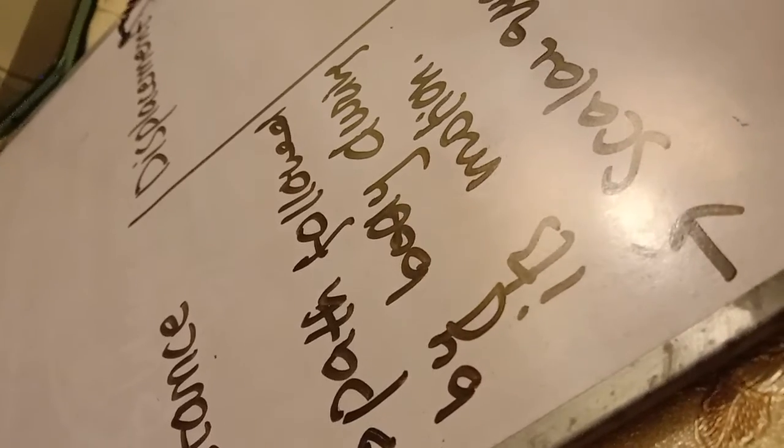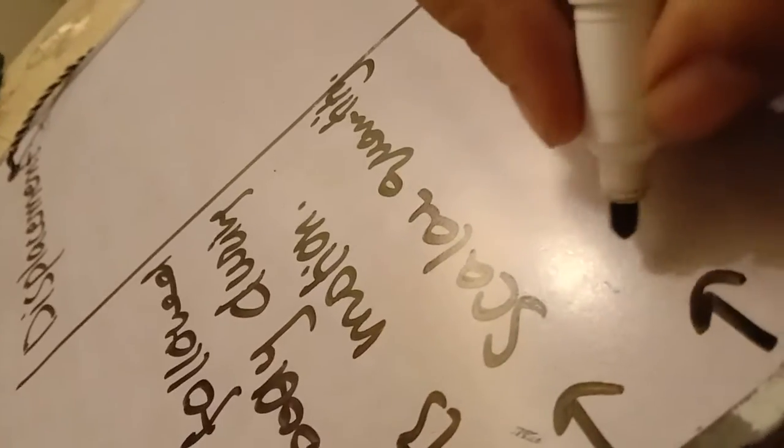Now let's discuss about distance and displacement. Distance is the path or way that is followed by a body during its motion — it is known as distance. It is a scalar quantity, and the SI unit of distance is meter.